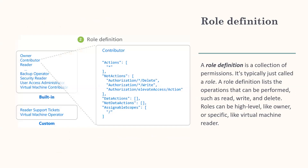Role definition: a role definition is a collection of permissions, typically just called a role. A role definition lists the operations that can be performed, such as read, write, and delete. Roles can be high-level like Owner, or specific like Virtual Machine Reader. Azure includes several built-in roles that you can use, or you can create a custom role. I will show you how to use built-in roles and how to create a custom role when we are in the Azure portal.